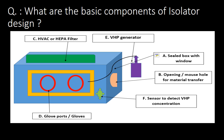Component B shows the opening or the mouse holes for material transfer. Component C shows the HVAC or HEPA filter, which are used to maintain Grade A or ISO 5 environment inside. Component D shows the glove port or gloves, which are used for intervention inside the isolator. Component E shows the VHP generator, which introduces vaporized hydrogen peroxide into the isolator.